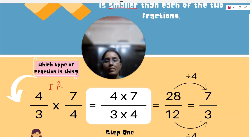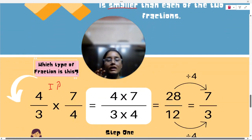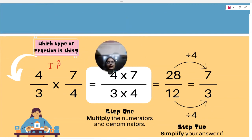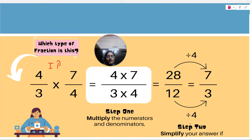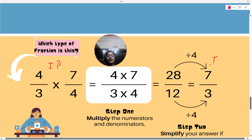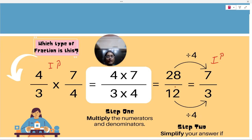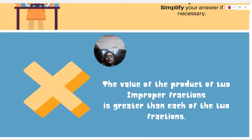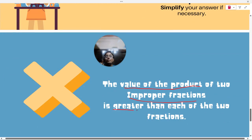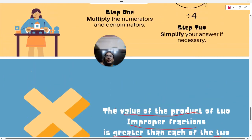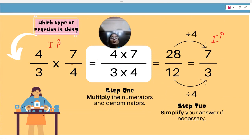Now, when I multiply the improper fraction — for example 4 by 3 multiplied by 7 by 4 — the numerators multiply: 4 into 7 is 28, and denominators: 3 into 4 is 12. When we multiply two improper fractions, we also get an improper fraction. The product of two improper fractions will be greater than each of the two fractions.